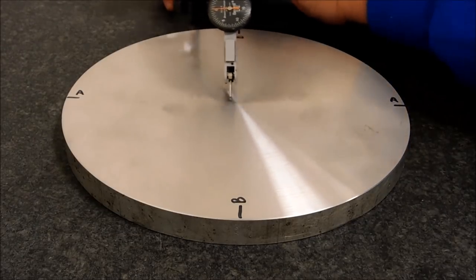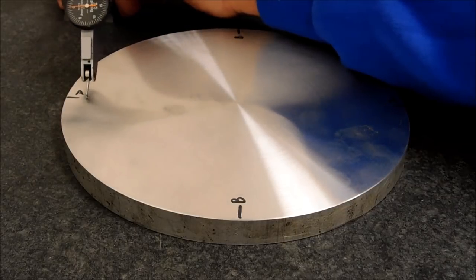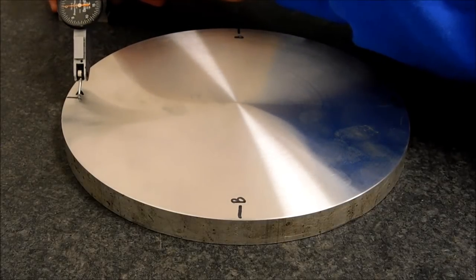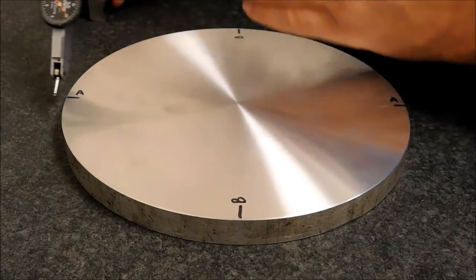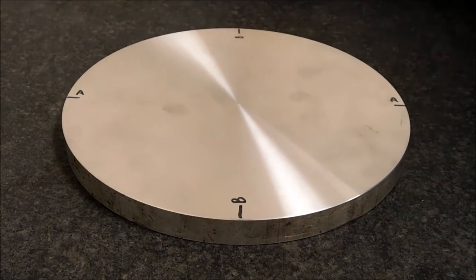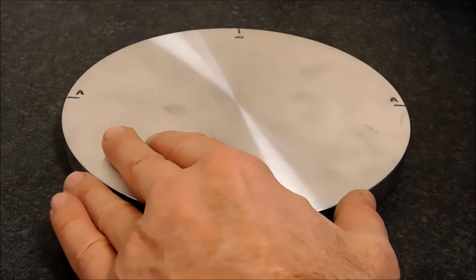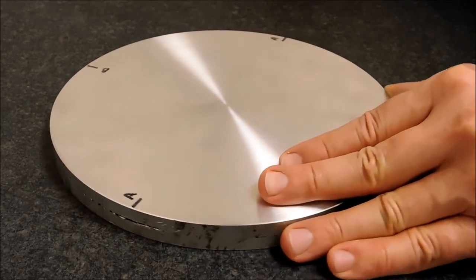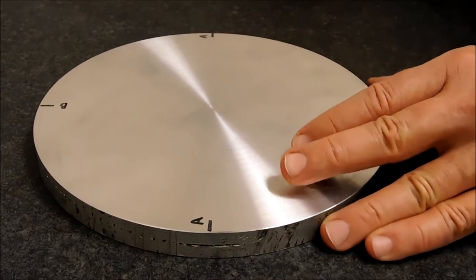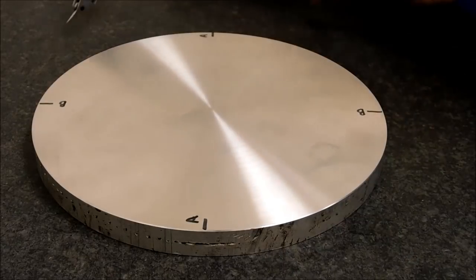But I would say going across the center from A to A we're looking pretty good as far as zero is concerned. So I can assume with a great deal of security that A to A is not only flat but it's parallel to the other banking side. Now I'm going to check B to B.